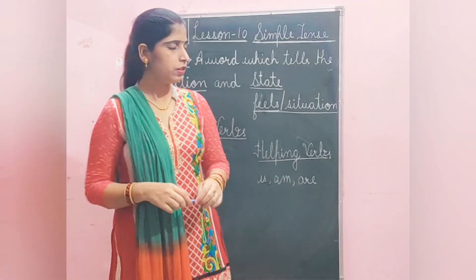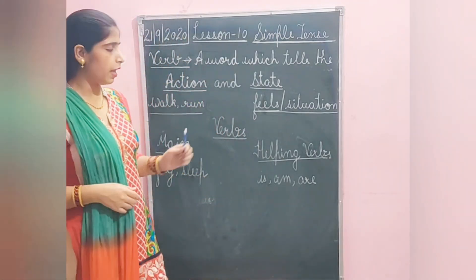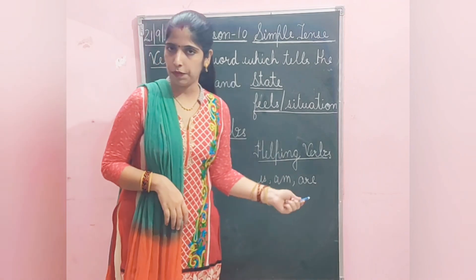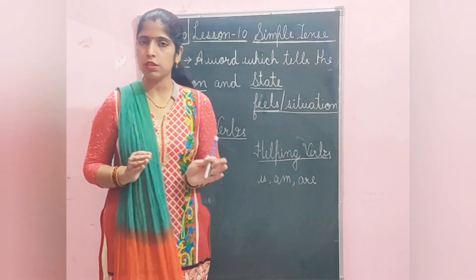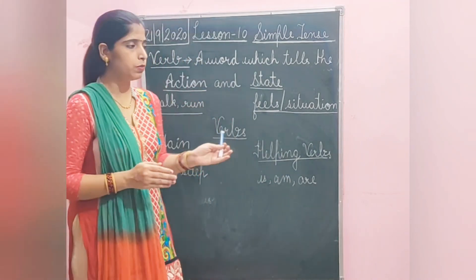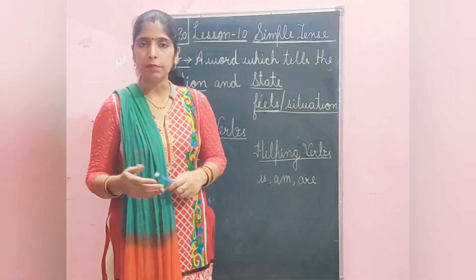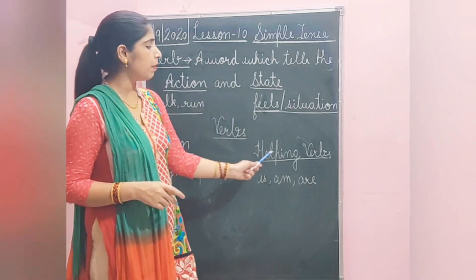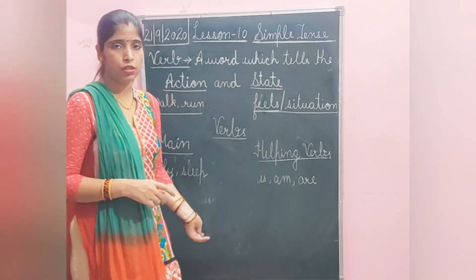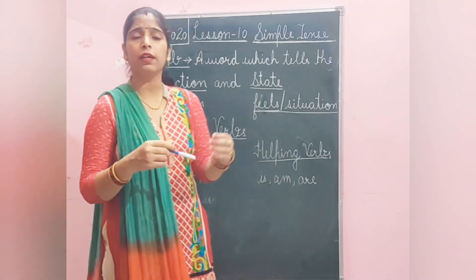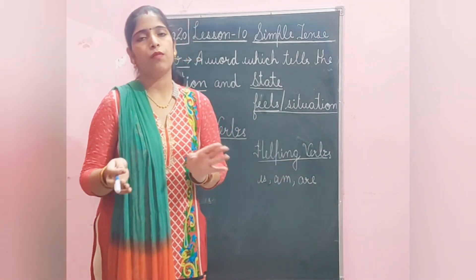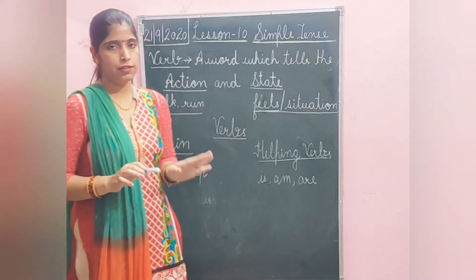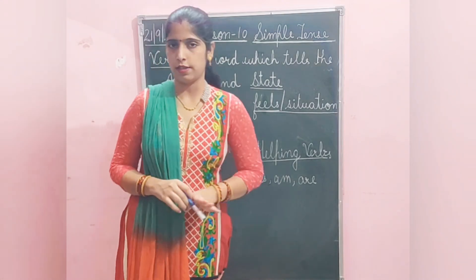Again, there are two types of verbs: main verbs and helping verbs. Main verbs like fly, cry, sleep keep the actual action, and helping verbs support these main verbs — like is, am, are, was. All this we have already discussed.